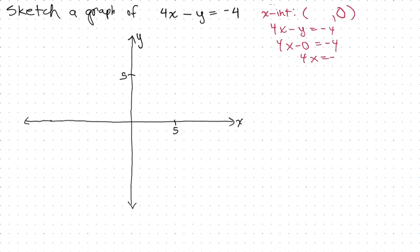So 4x = -4, and x is -1. So my x-intercept - I go up here and fill it in. When y was 0, x was -1.